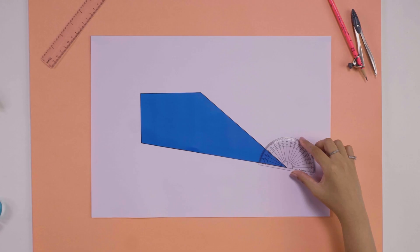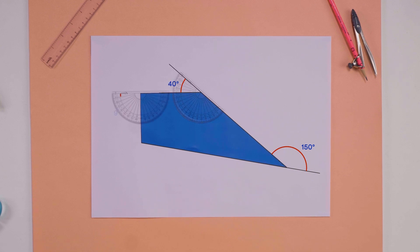Let's verify. This angle measures 150 degrees. This one, 40 degrees. 90 degrees. And 80 degrees. Again, adding up to 360 degrees.